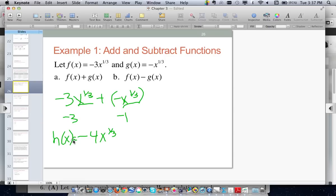Now for part b. So this is part a. Part b. We're subtracting. So I have negative 3x to the 1/3 minus negative x to the 1/3.